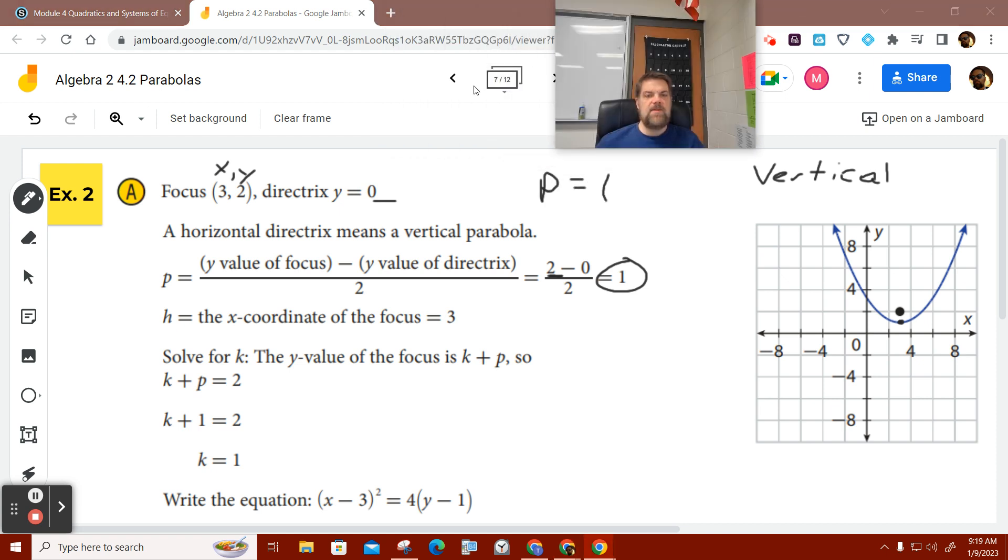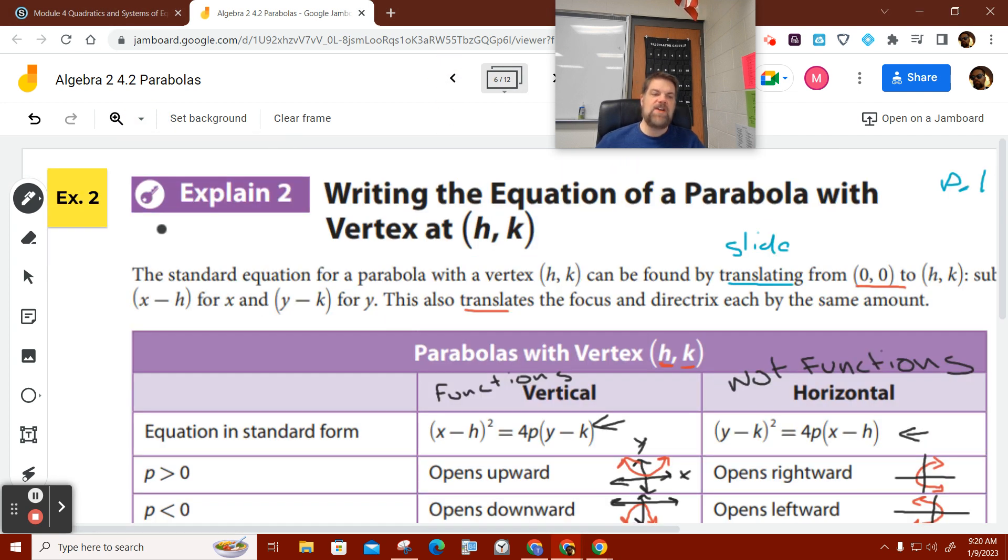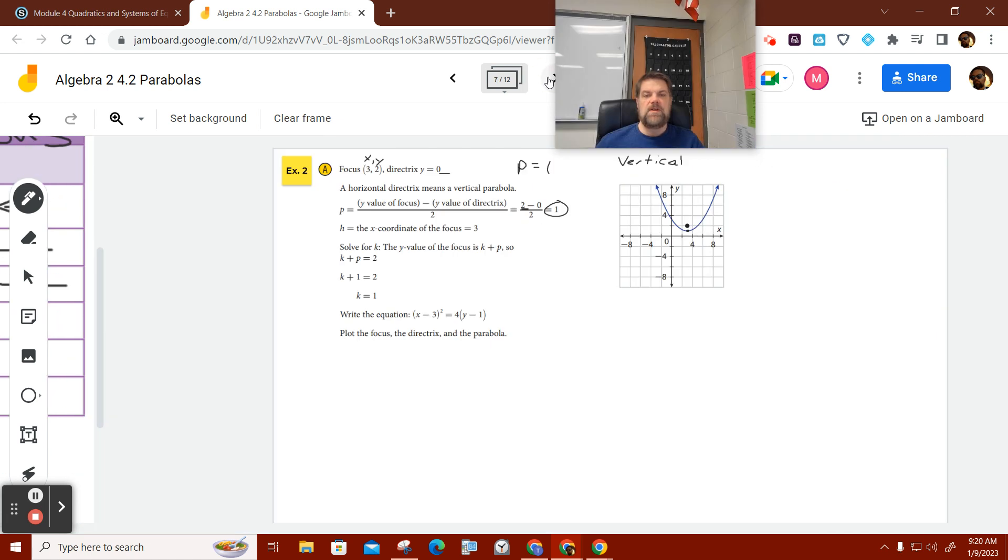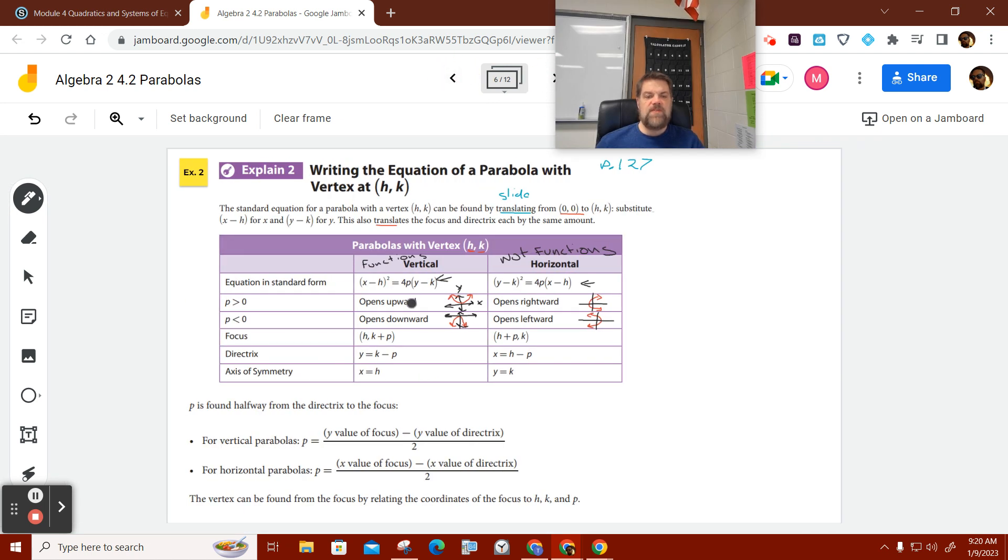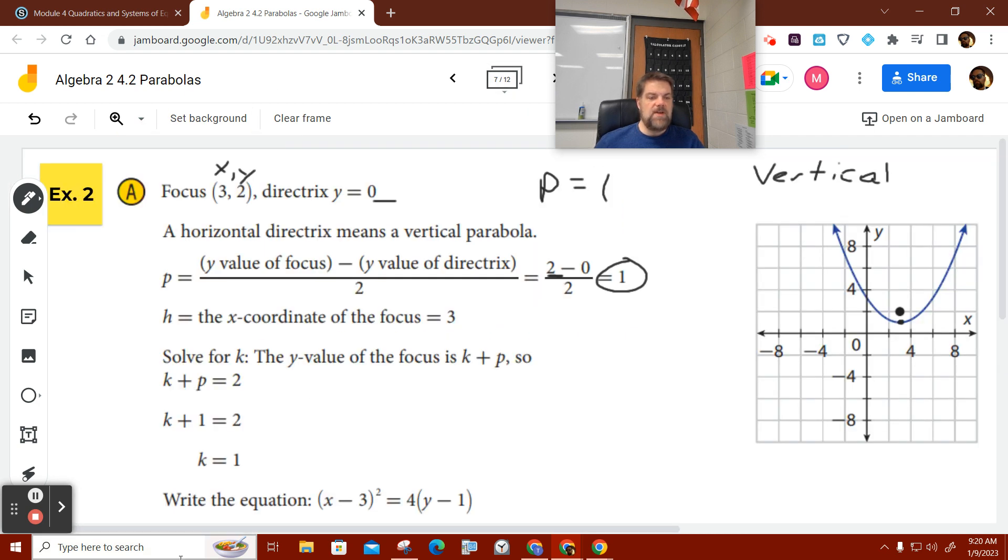So what I'm going to do is I'm going to compare all this information. I'm only going to use this information. If P is greater than zero, which it is in this case, P is one, that means my parabola opens up. Guess what? My parabola opens up. To find the vertex, what's the vertex? It's H comma K plus P. So to find the vertex of this thing, I'm going to say H equals the X coordinate of the focus. That's on that previous table. So that's three.